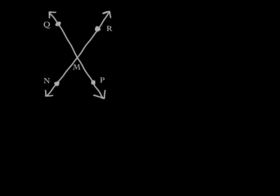Here we have angle NMP. If we extend the sides of this angle like this, then we form another angle, RMQ. The pair of angles NMP and RMQ are called vertical angles, and vertical angles have equal measures. We also have another pair of vertical angles: NMQ and PMR are also vertical angles, so they have equal measures.